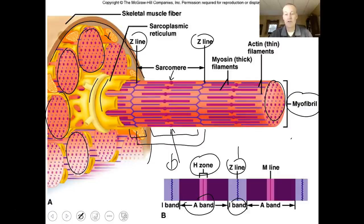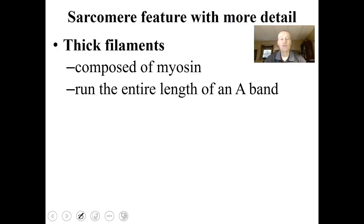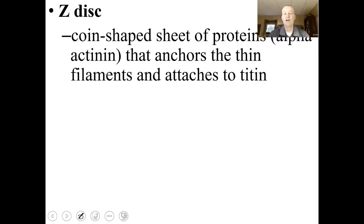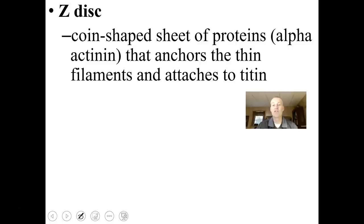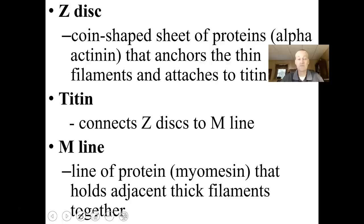The thick filaments are composed of myosin and run the entire length of the A-band. The thin filaments are composed of actin and run the length of the I-band and partway into the A-band. The Z-disc is coin-shaped and made of a sheet of proteins called alpha-actinin that anchor to the thin filaments; it also attaches to the protein titan. Titan connects the Z-discs to the M-line. The M-line is made up of the protein myomesin, which holds the thick filaments in place.